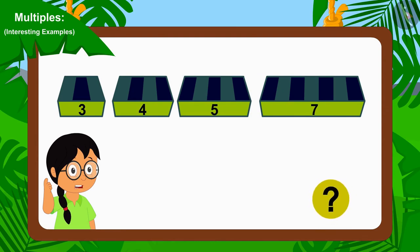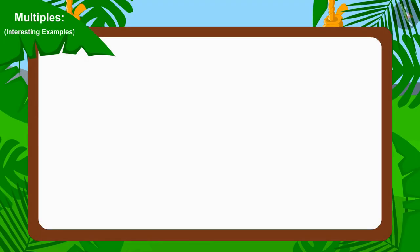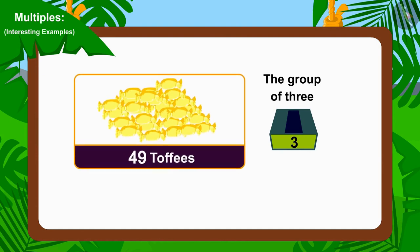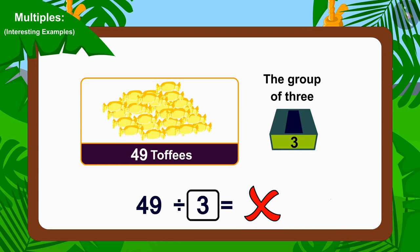Let's first try to divide these toffees into groups of three and see if there are any toffees left. How can we easily do this? Correct, we just have to see if we can divide 49 by three. Can we do that? No, we cannot divide 49 by three.